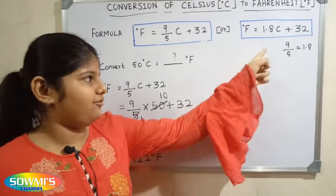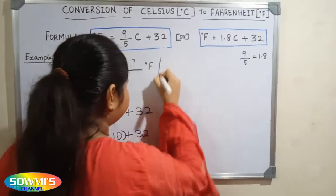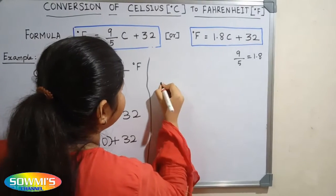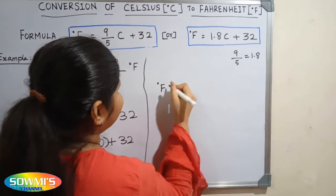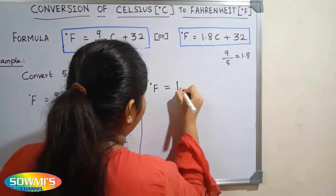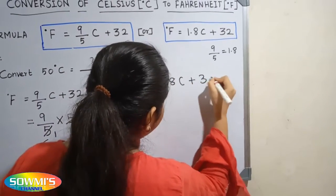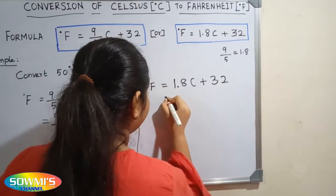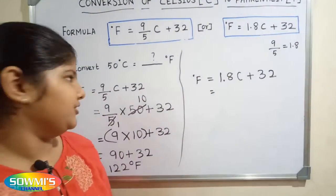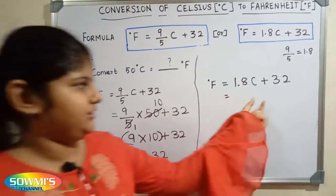Next, we will apply this formula. Degree Fahrenheit is equal to 1.8 multiply Celsius plus 32. Now we have to substitute 50 in the place of Celsius.